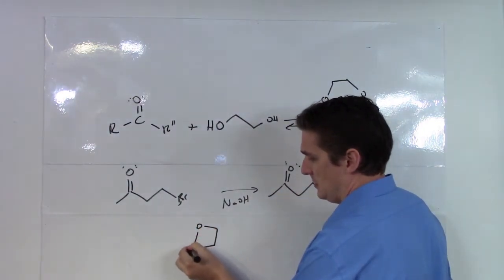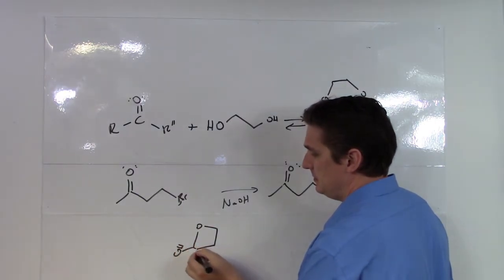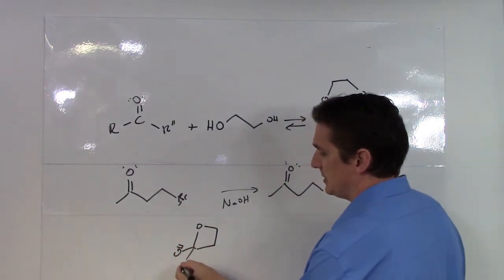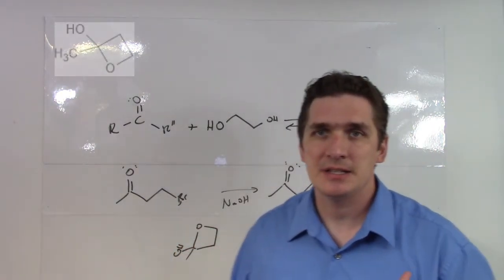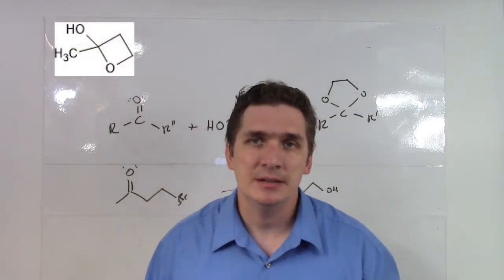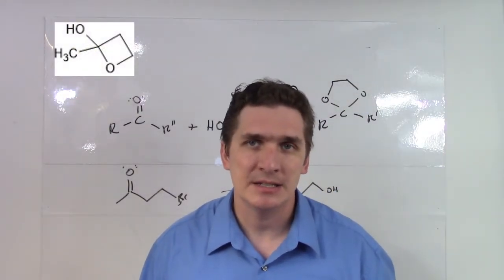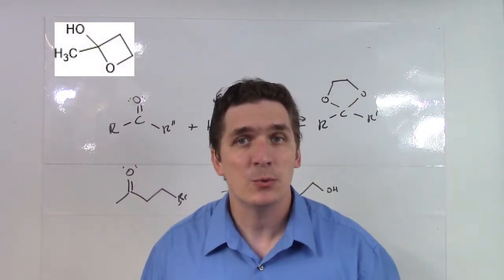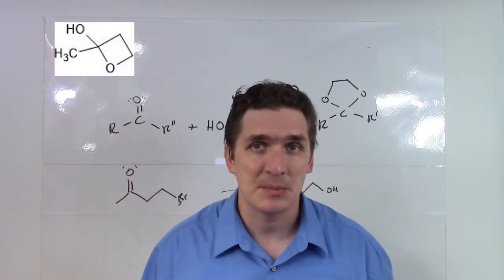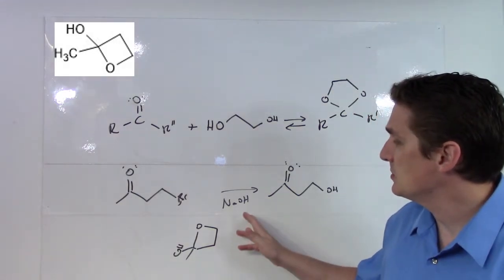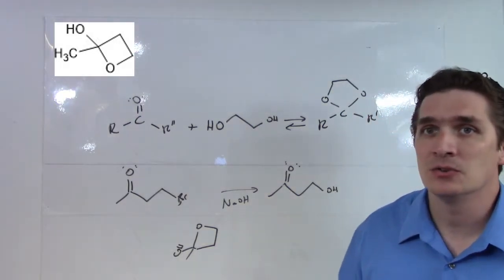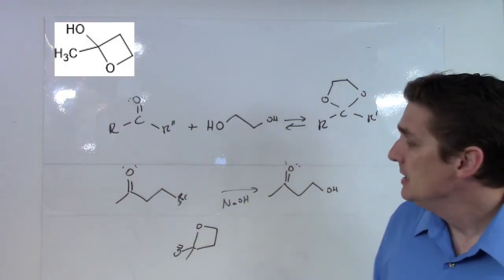Let me make sure I show this correctly. The result is a cyclic complex. For something like cyclobutane you're less likely to get it, but definitely if you were forming 5- or 6-membered rings, you would have the issue of subsequent attack of the alcohol group on the electrophilic carbon.